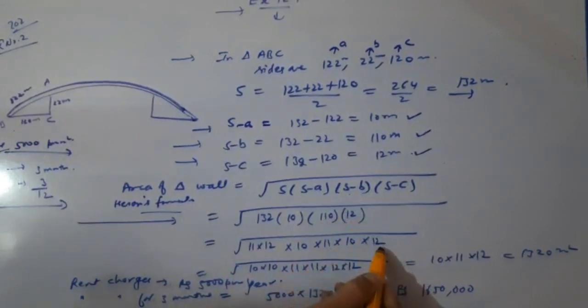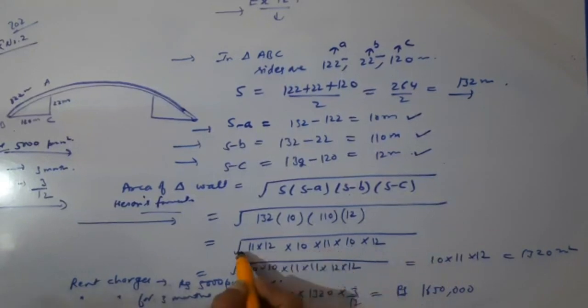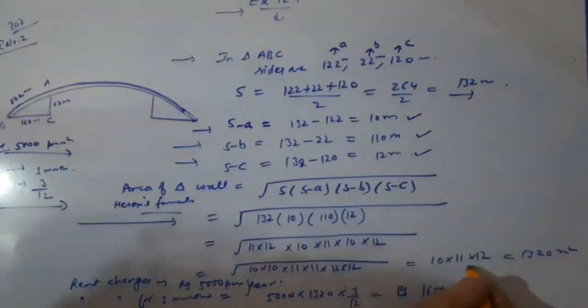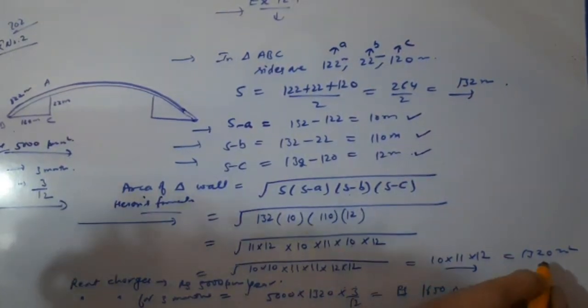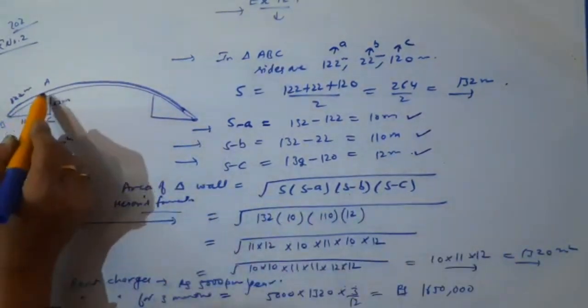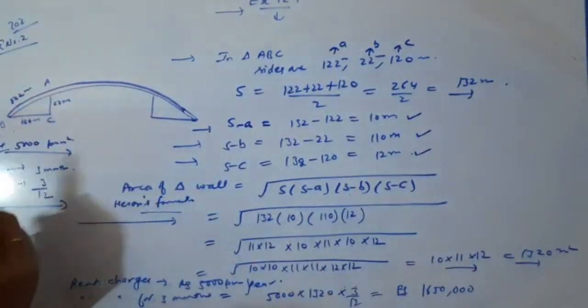10, 10, two times. 11, 11, two times, one pair out. 12, 12, two times, one pair out. After multiplying all this, we are getting 1320 meters square. So this is our area.